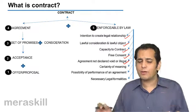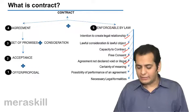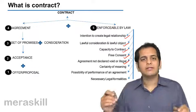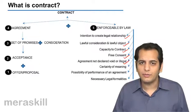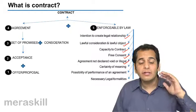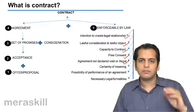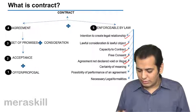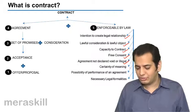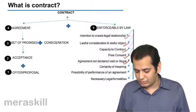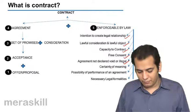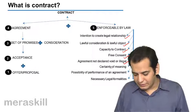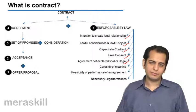Now in this part, we will take up the remaining essentials which are required in a contract to make it enforceable by law. Those remaining essentials are: certainty of meaning, possibility of performance, and finally necessary legal formalities.